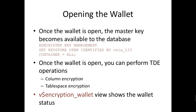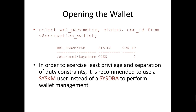Opening the wallet: once the wallet is opened, the master key becomes available to the database. Use ADMINISTER KEY MANAGEMENT SET KEYSTORE OPEN IDENTIFIED BY your password CONTAINER=ALL. Once the wallet is opened, you can perform TDE column encryption and tablespace level encryption. The V$ENCRYPTION_WALLET view shows the wallet status — whether it is opened or closed — and it will show the file status.